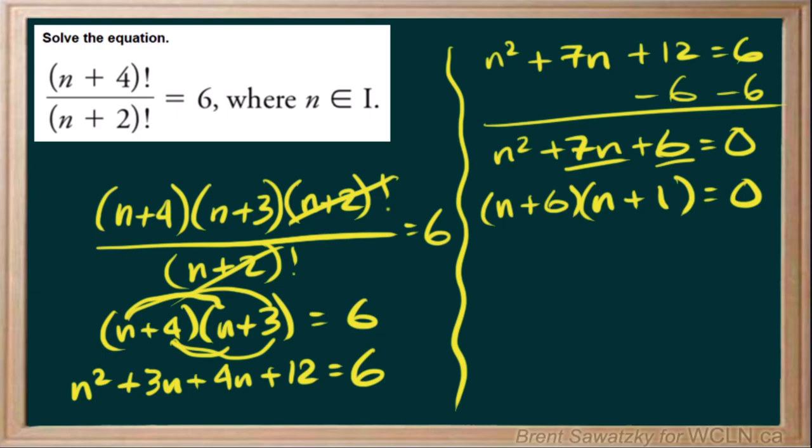So now we can say, ah, in order to make this true, we just have to make either one of these factors equal to 0. So what would make the first factor 0? Well, if n was minus 6, minus 6 plus 6 is 0. What would make the second factor 0? Minus 1. So negative 1 plus 1 is 0. So yes, there's two possible answers here.